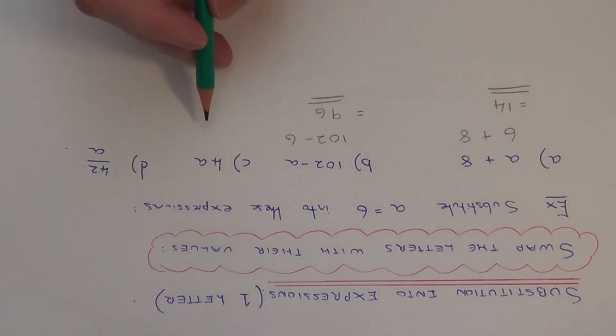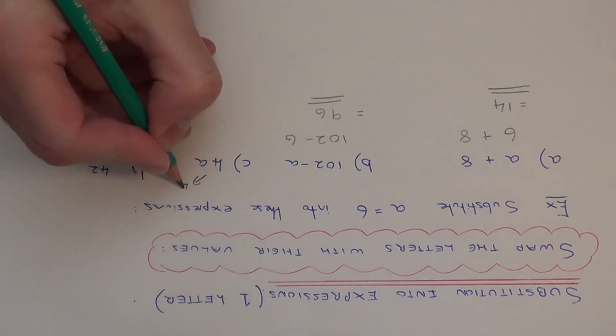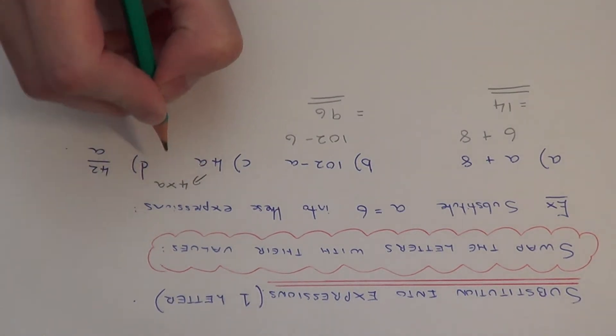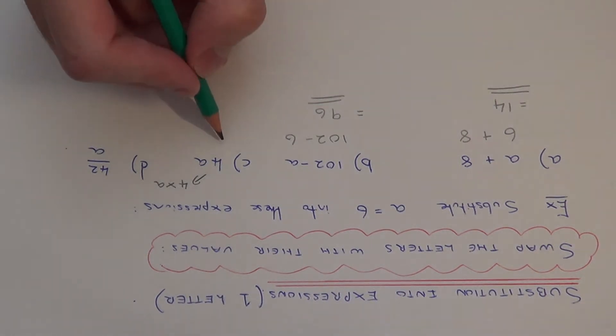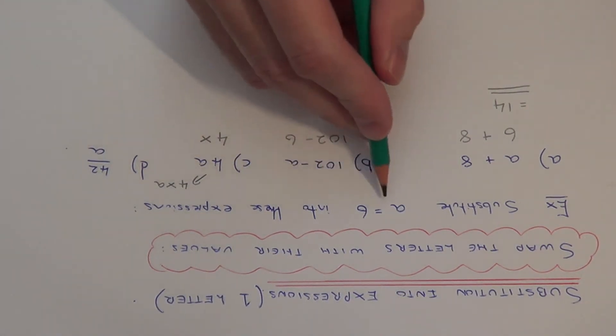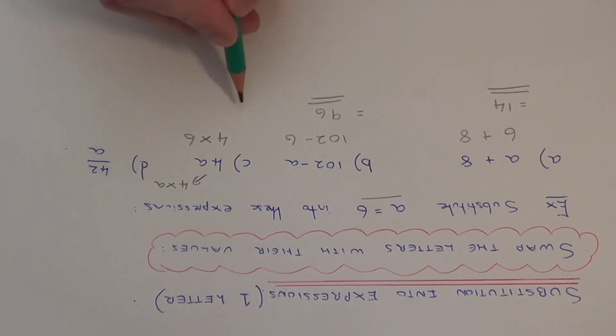Part c is a little bit trickier. This time we have 4a. Now when you have a number in front of a letter, this actually means 4 times a. So on our next line we're going to write down 4 times 6, and 4 times 6 is 24.